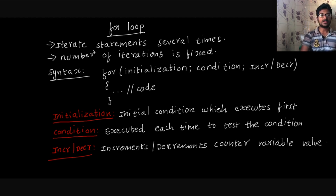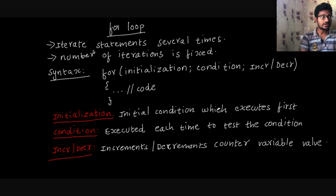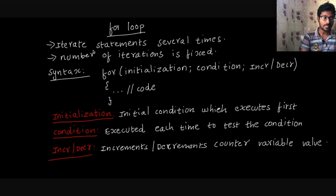For example, if you are an engineering graduate, you have totally eight semesters and you have to sit every semester. So we can use a loop. If you have any questions you can't answer, we can avoid the for-loop. But if the number of iterations is fixed, we can use the for-loop.